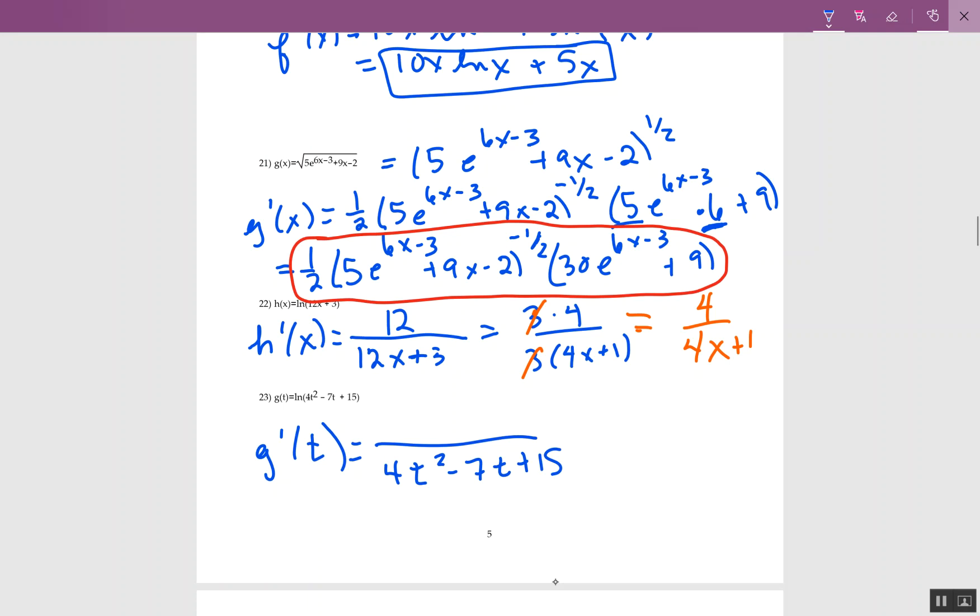The derivative of that, 4t squared is 8t, and this minus 7t is just negative 7. So nothing else to do. That one's perfectly fine.